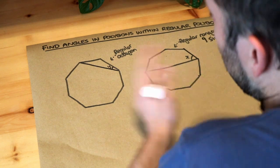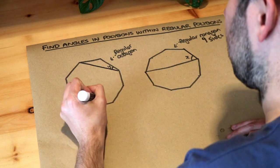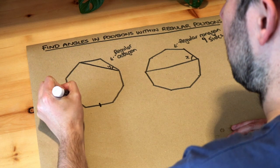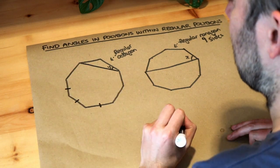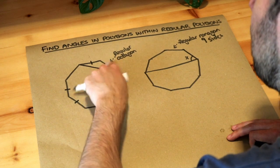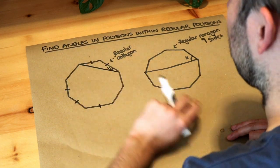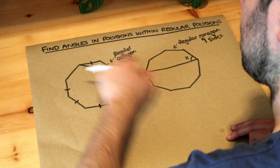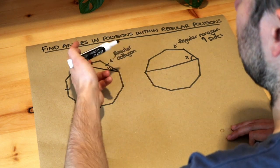Now the key here is just realizing, well, if it's a regular octagon all the sides are the same length, so that side is the same length as that side, the same length as that side, etc. So these two sides here, we indicate with this single mark they're the same length, and that means this is an isosceles triangle. It has two sides of the same length.